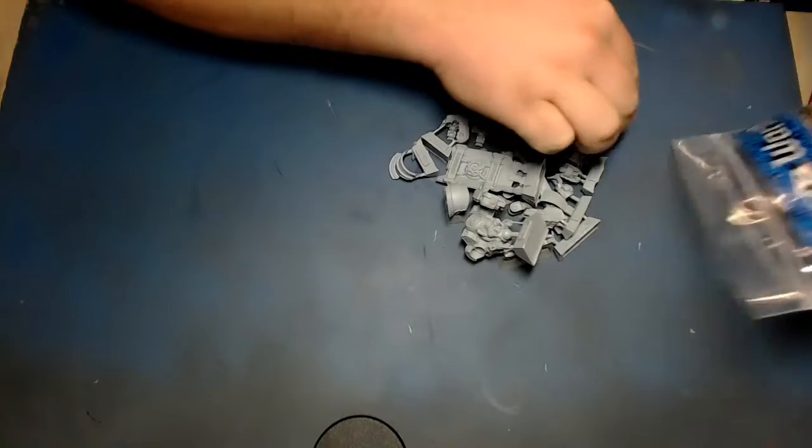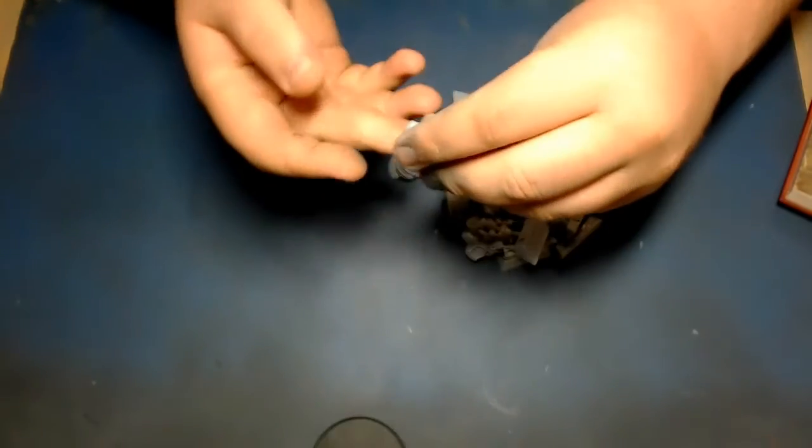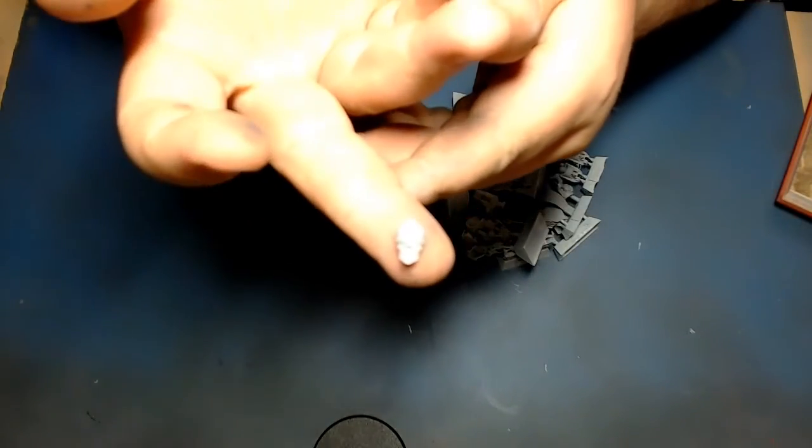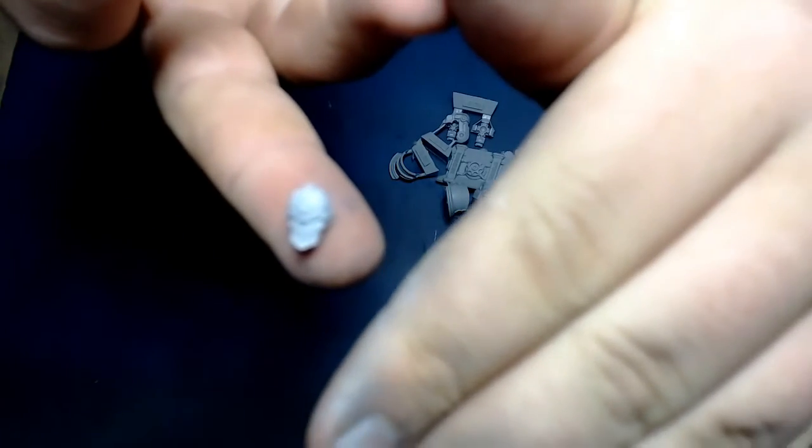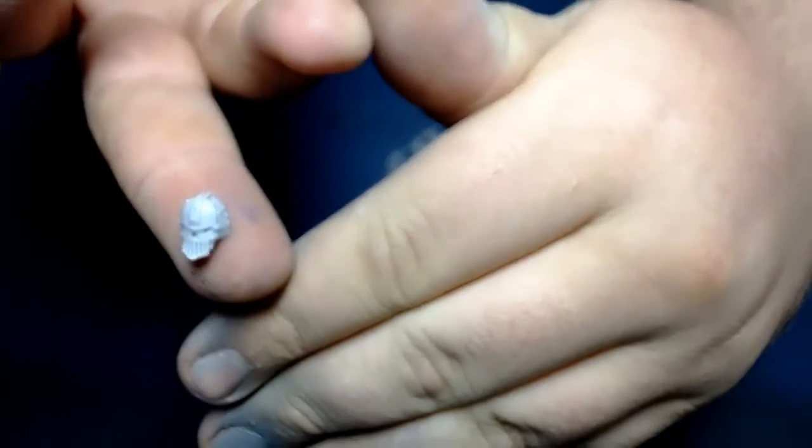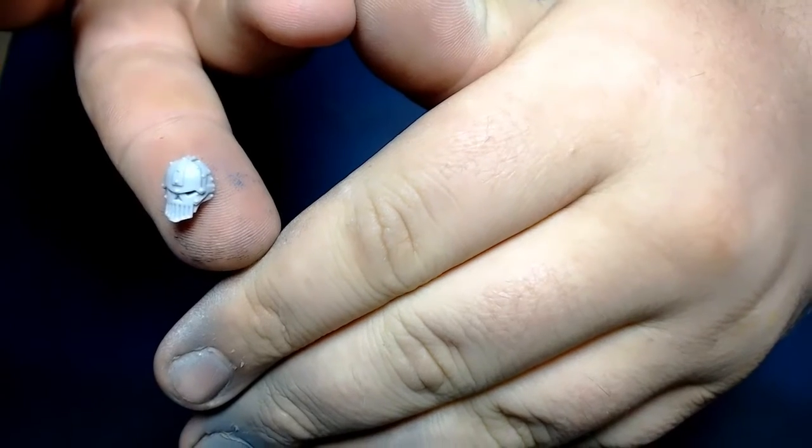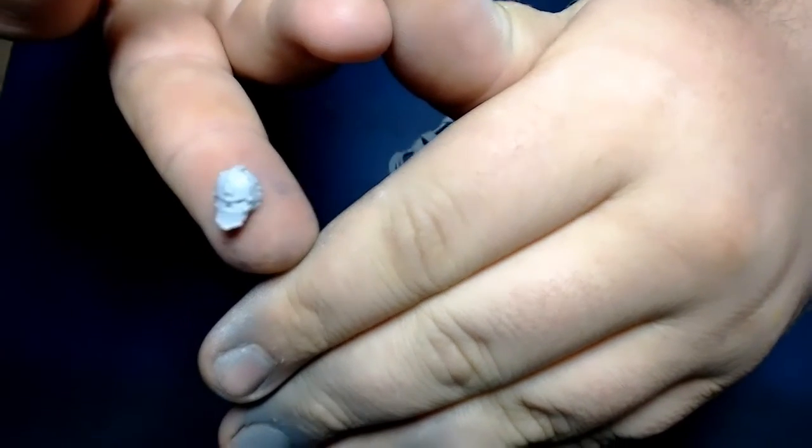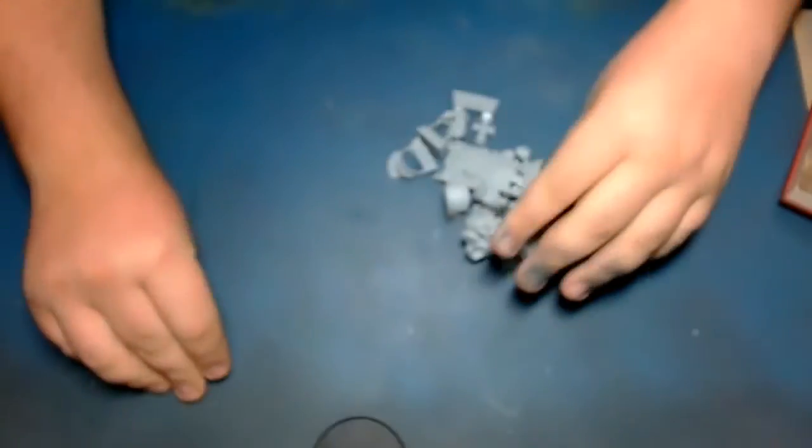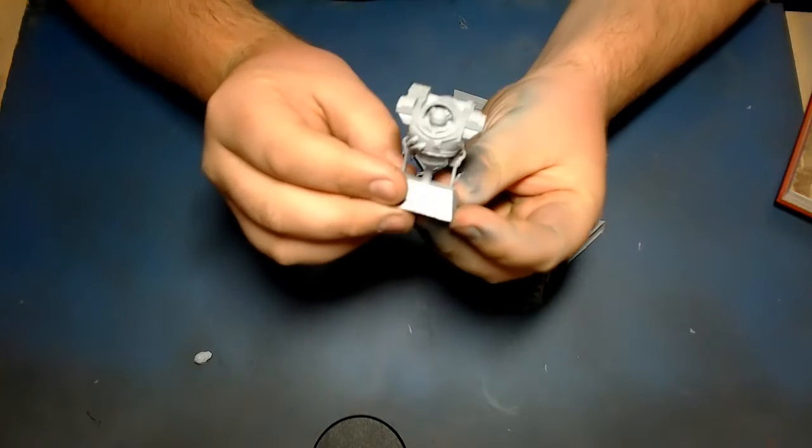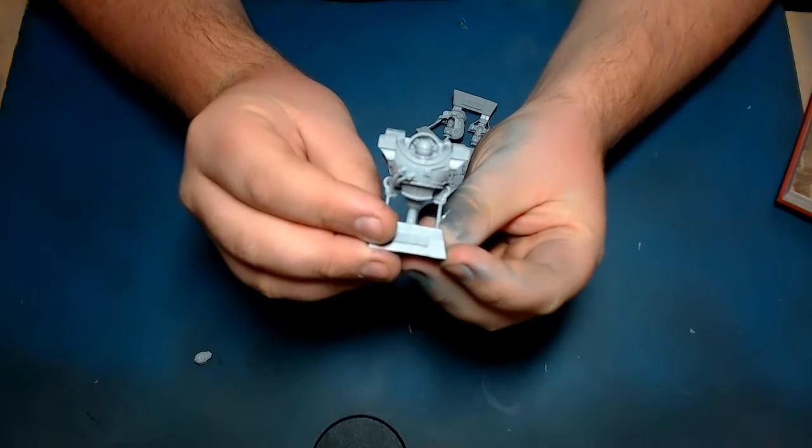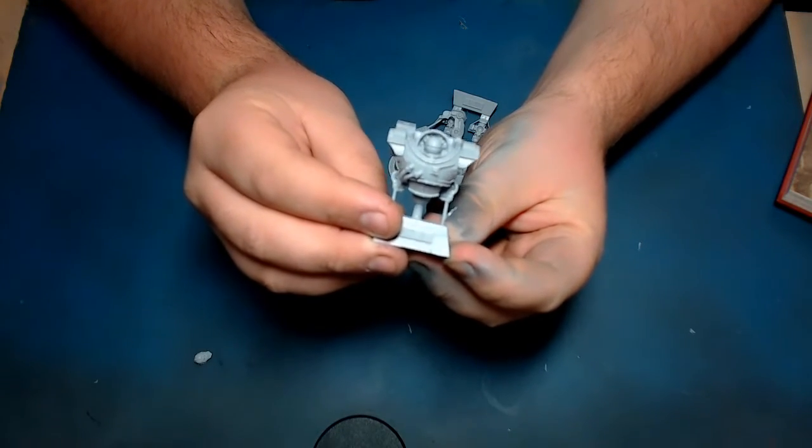You've got the face, a tiny piece. There you go, it's quite a nice little face. Excuse the paint on my hands—I've been painting all day. So yeah, that looks pretty cool. You've got the actual body of the Iron Circle itself.